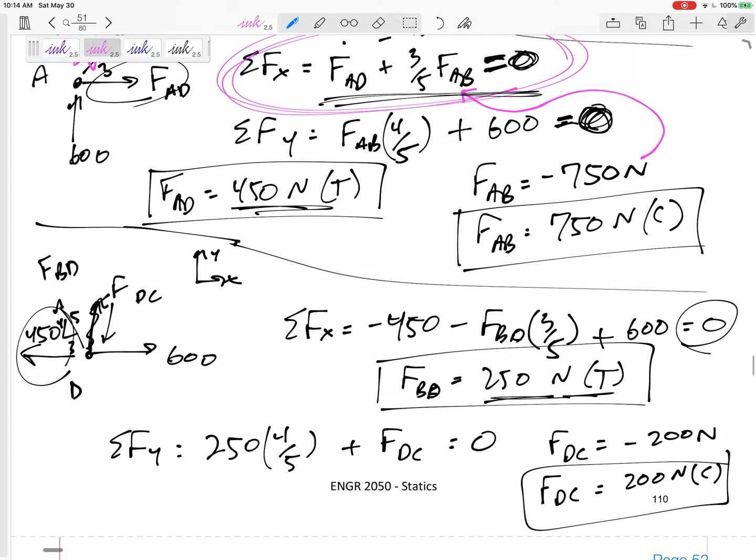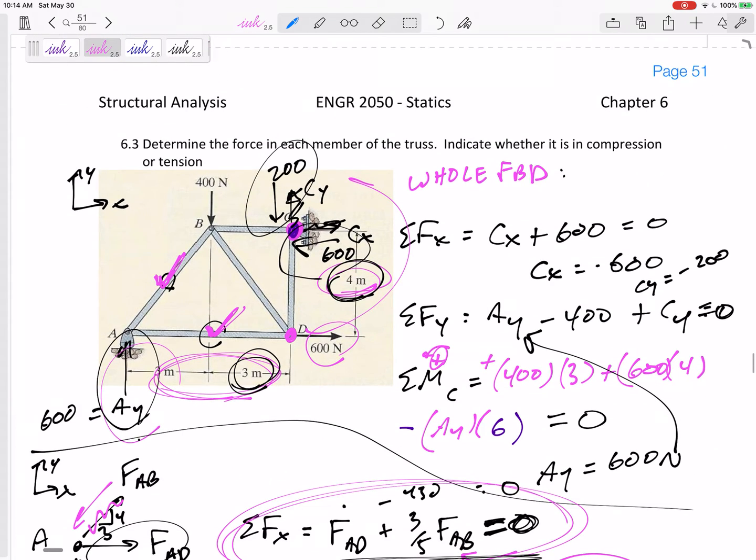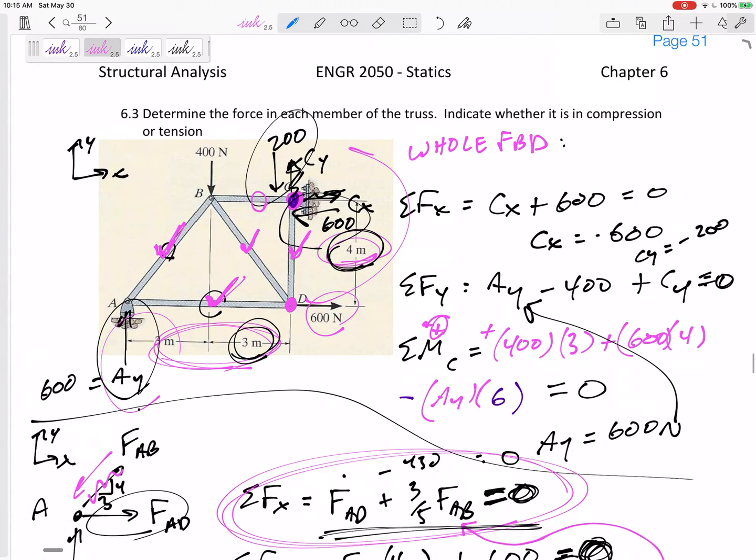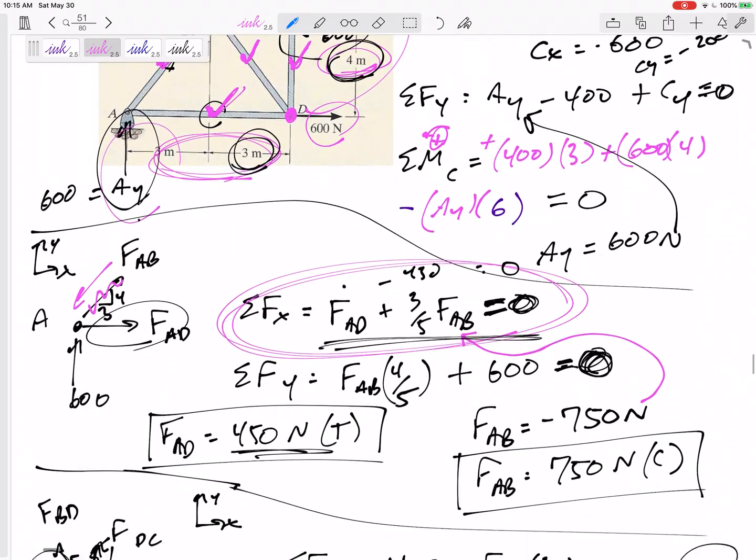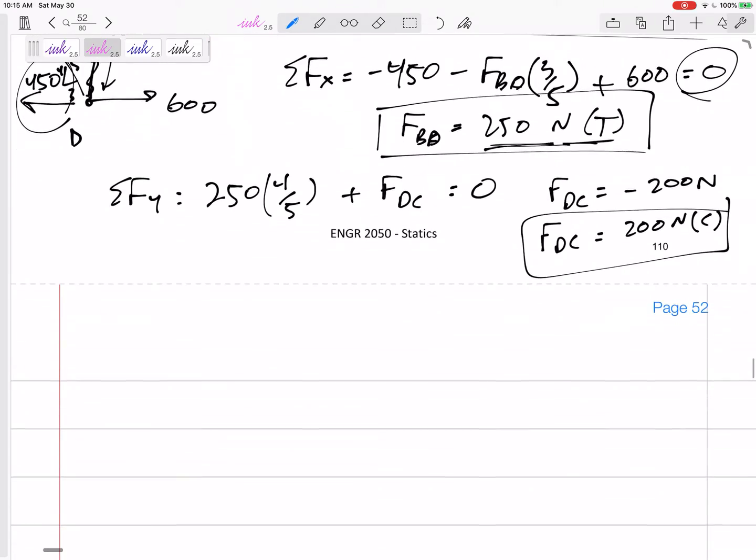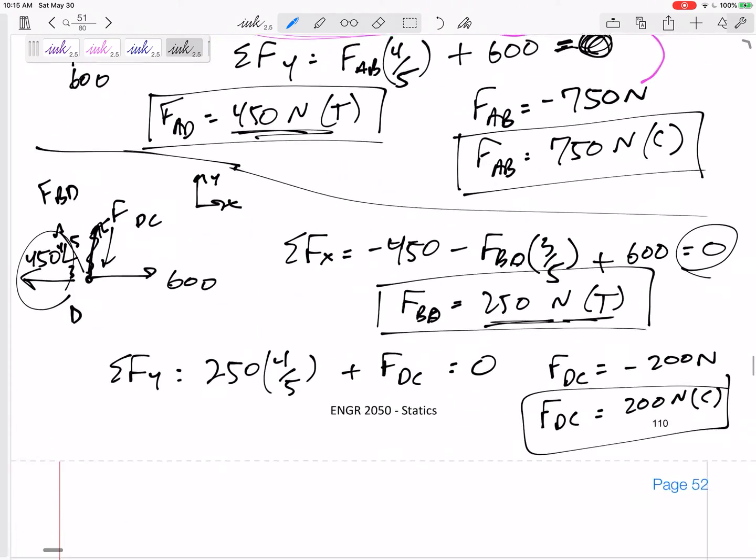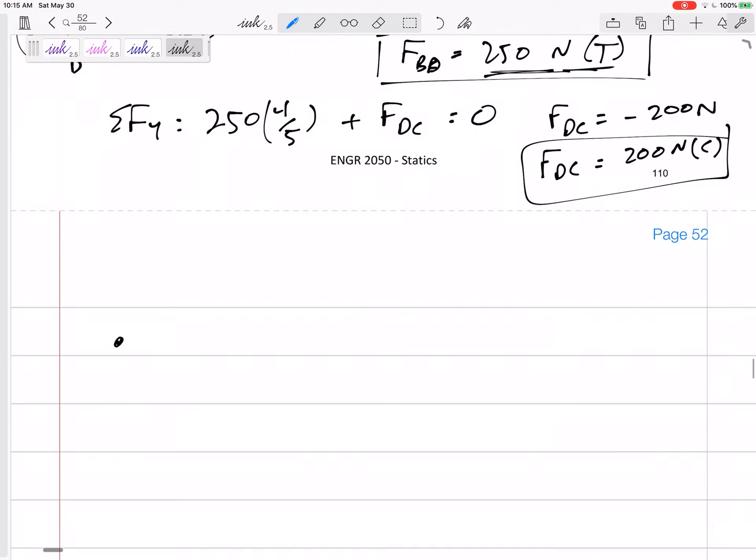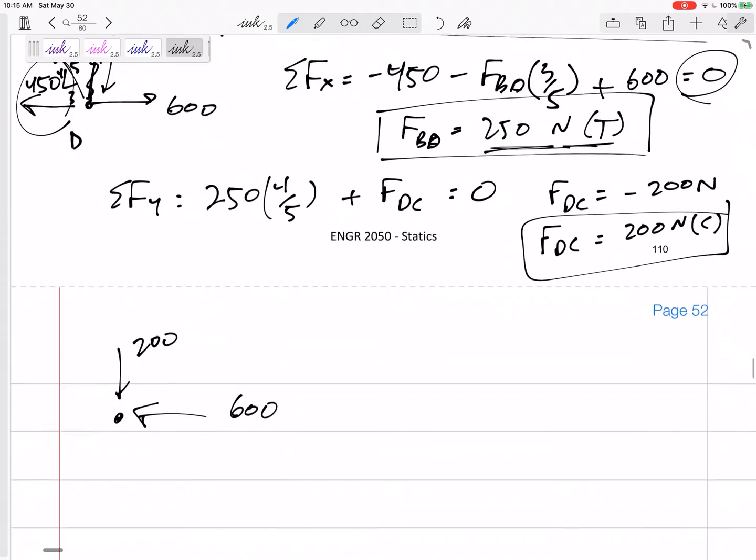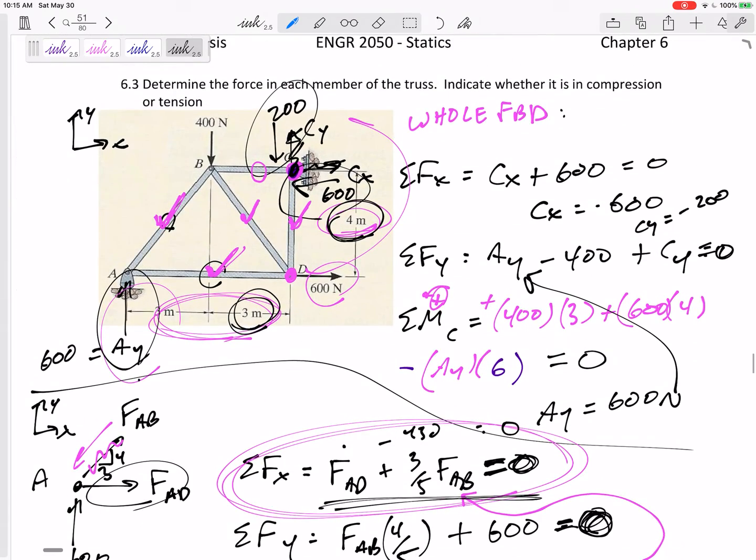And so, I've solved now for this one and this one. I think I have one left. I could go to joint B, I could go to joint C. I could go to both to double check. Let me go to joint C real quick, joint C up here. Joint C, I already knew from the whole free body diagram that I have 600 right here and I have 200 right here. That was from the pin, that was from the whole free body diagram.